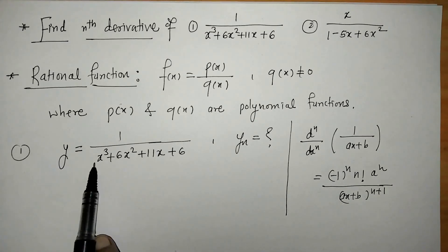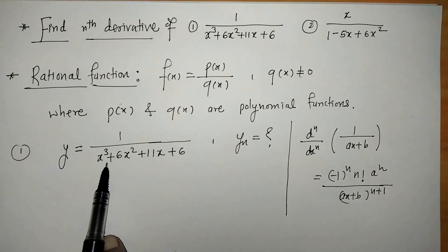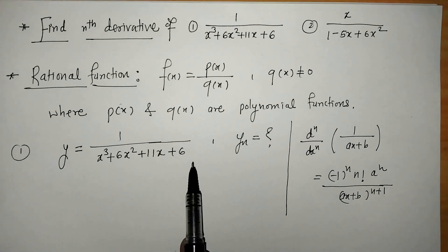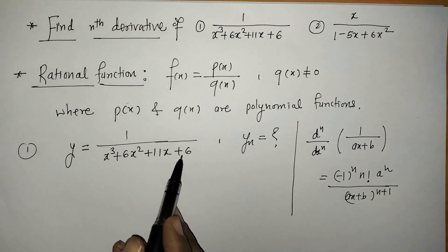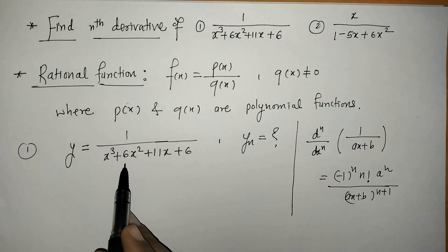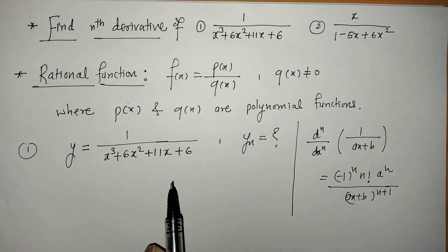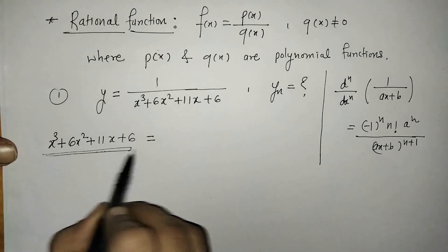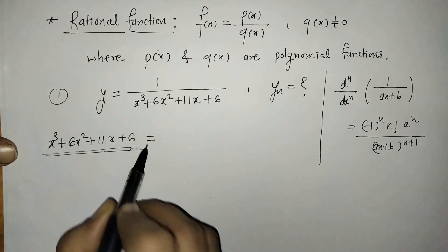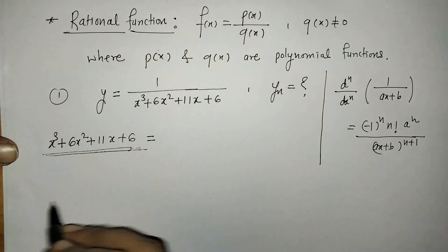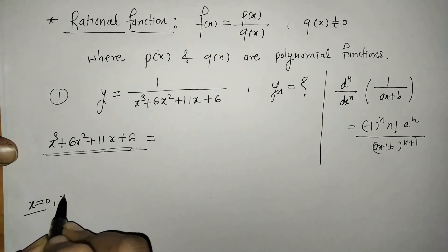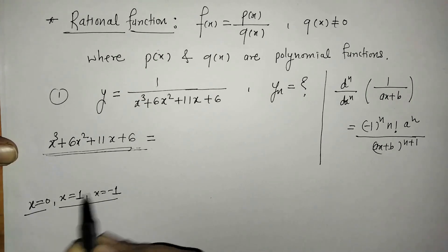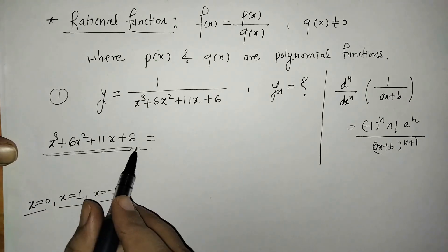We can check that here in the denominator we have a polynomial of degree 3. That means we have to factorize it into linear polynomials. To factorize this cubic polynomial we have to use the synthetic division method. For finding the first factor we have to use trial and error — putting x = 0, x = 1, then x = -1 to see which value satisfies the polynomial.